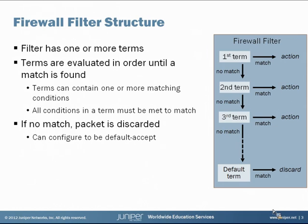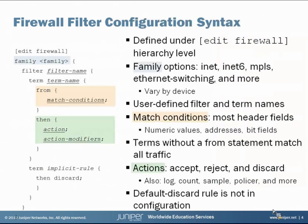You can reconfigure this if you wish by including a default term. Here's a look at the configuration syntax for a firewall filter. The work is done under the edit firewall hierarchy level. The first option is the family — you can create firewall filters specific to a particular protocol family like we saw earlier: IPv4 would be INET here, IPv6 would be INET6, MPLS, Ethernet switching, and there are more as well.